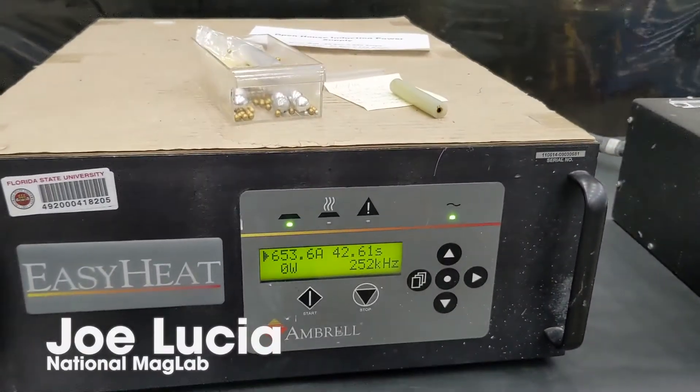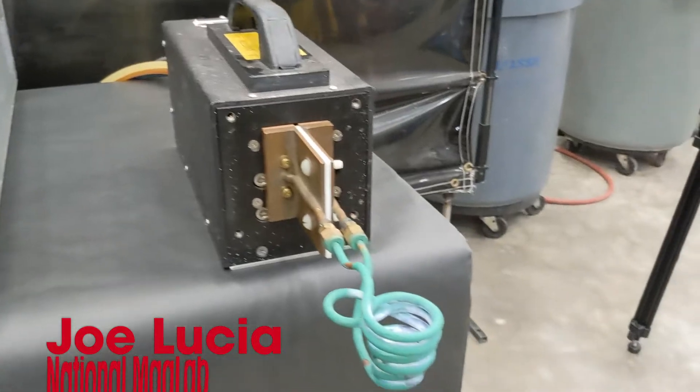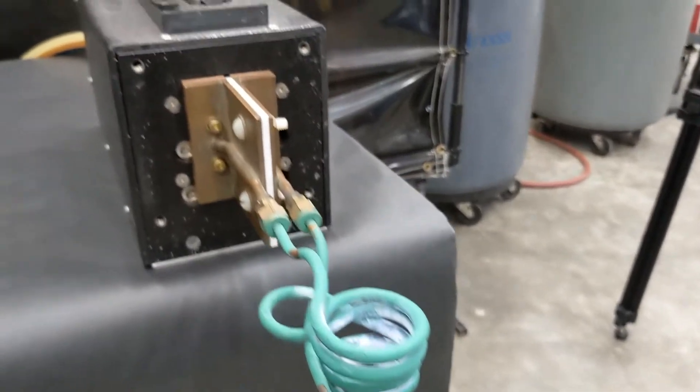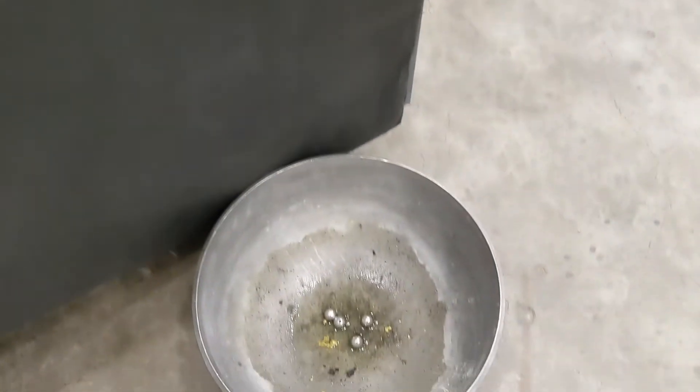When an electric current is passed through a coil, it will induce a current into any conductive material placed in the middle of the coil. Resistance in the material will cause that induced current to create heat in the material.